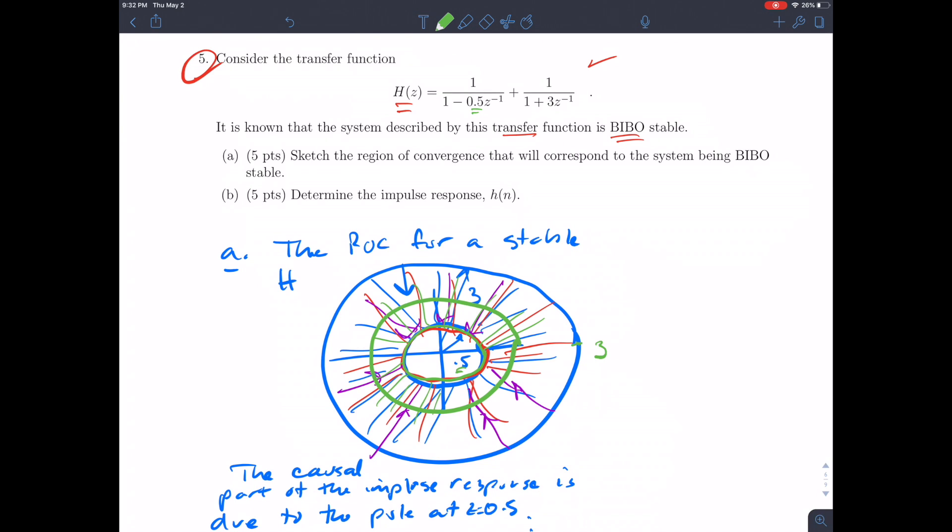Similarly, we know taking the pole location at minus 3—the pole's actually over here—we know that makes a circle, and the question is, where's the region of convergence? Well, to pick up the unit circle, we would have to have a disk in this case.